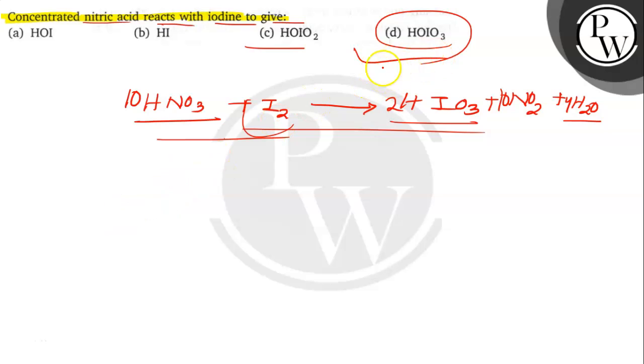Sorry, this is the wrong... this is the wrong type, because this is the correct form. So we can write it as HOIO2, because this is having one H, three oxygen, and one iodine.